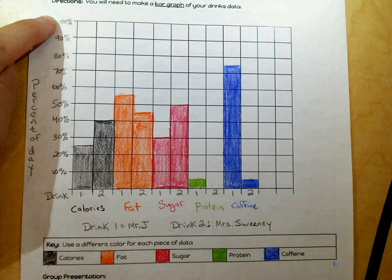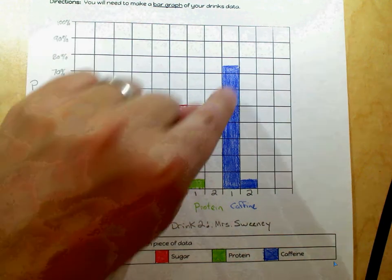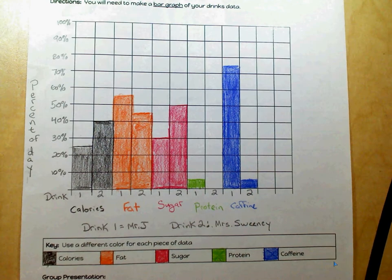Now, some of you might have above 100%, and that's okay. If you're above 100%, then this just goes up above the top of the line.